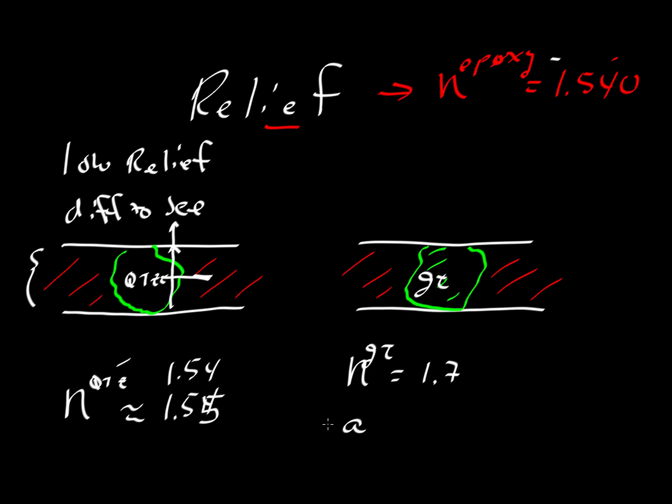Why would something like garnet have more than one value for the index of refraction? It is isotropic, which should only have one value. Well, it can vary depending on its composition.